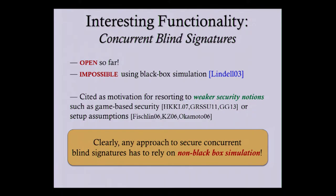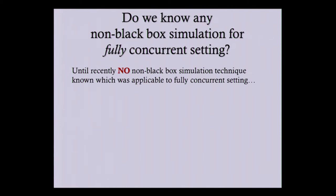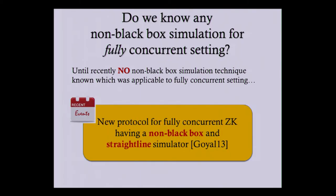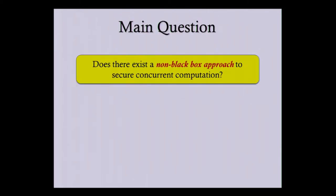This was cited as a major motivation for relaxed notions of security such as game-based security and using trust assumptions. It is clear from this impossibility result that any approach to concurrently secure blind signatures has to rely on some kind of non-black-box simulation technique. Do we know of any such non-black-box simulation technique in the fully concurrent setting? Until recently, the answer was no. Then in 2013, Goyal gave a new protocol for concurrent zero knowledge with a non-black-box and straight-line simulator. And in this work, we asked: does there exist a non-black-box approach to secure concurrent computation? The answer is yes.